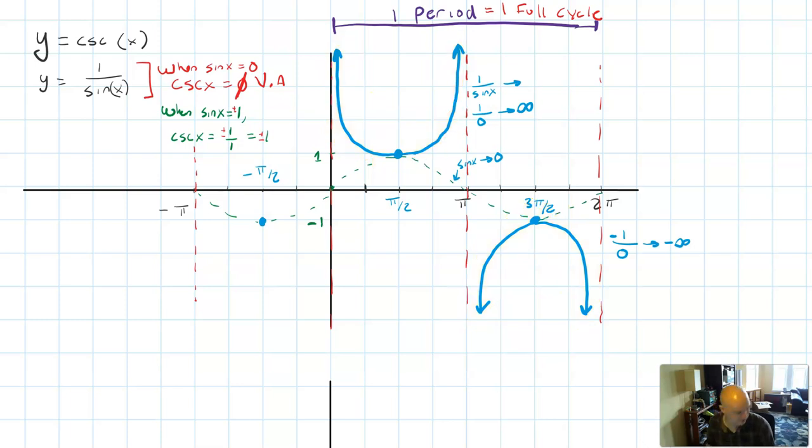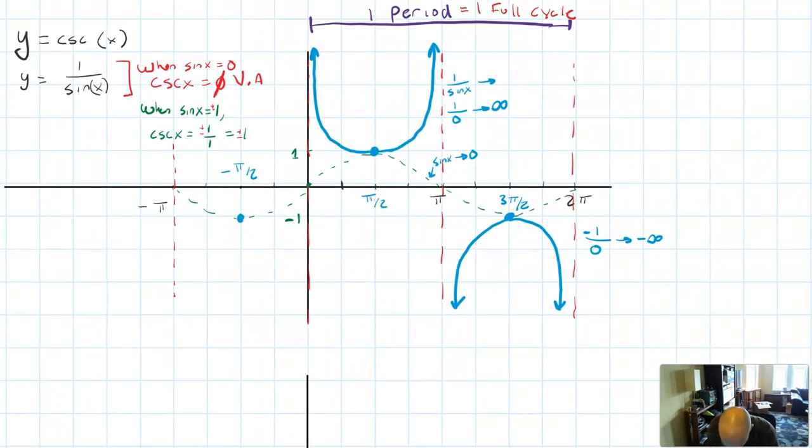So if your book is telling you to graph one full period, you need to graph this. If they're telling you to graph two full periods, then you need to graph four things. And this is not quite two full periods. I could either continue off this way. I'm out of space over there. So I'm going to choose to continue off this way.